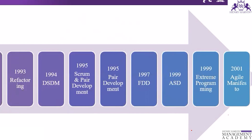Seventeen people were involved in creating the Agile Manifesto. They came together at a conference and discussed how development should be done, since all the methods introduced from 1992 to 2001 had various problems. They took the best practices from Crystal, refactoring, DSDM, Scrum, pair development, FDD, ASD, and Extreme Programming, and together wrote the Agile Manifesto.